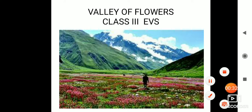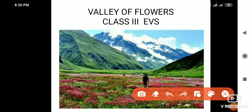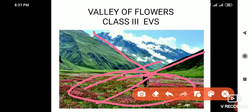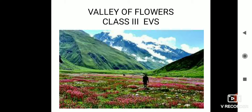Before we proceed further, we should know what a valley is. A valley is a low-lying area in between two mountains. Mountains form a V-shaped structure, and the place in between is called a valley. Valleys generally have a very cool and pleasant climate and are very beautiful places to live in. We all are also living in Dehradun, which is situated in a valley — that's why the climate here is so nice.